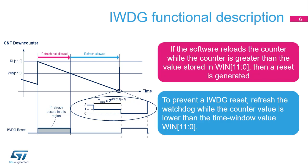This diagram illustrates how the Independent Watchdog operates. When the down-counter reaches zero, the watchdog reset is activated. This happens when the application software did not refresh the watchdog on time. If the software refreshes the watchdog while the down-counter is greater than the value stored in the window register, then a reset is generated as well. To prevent a watchdog reset, the refresh must occur when the down-counter value is higher than zero and lower than the time window value.